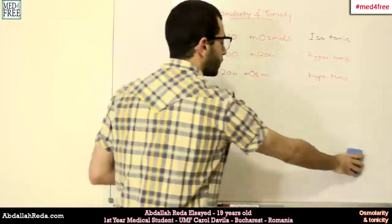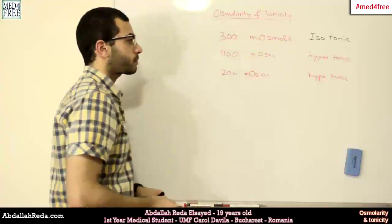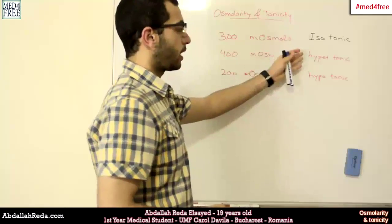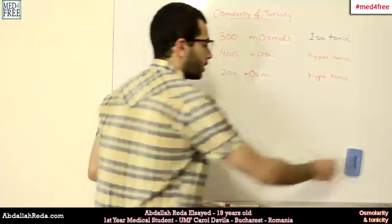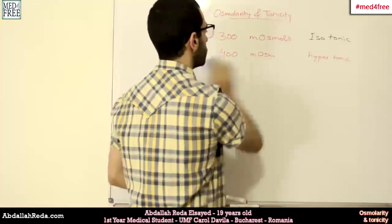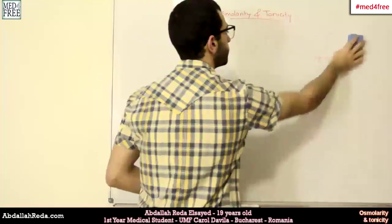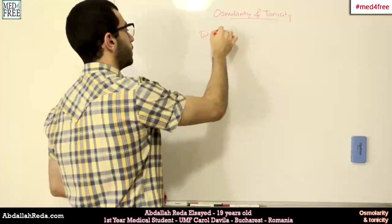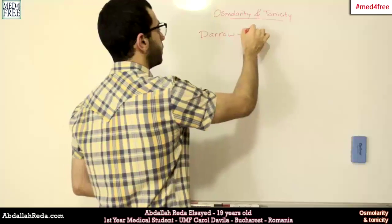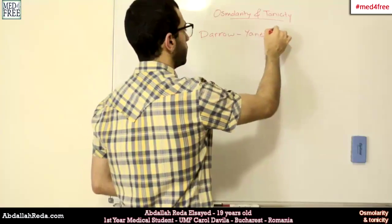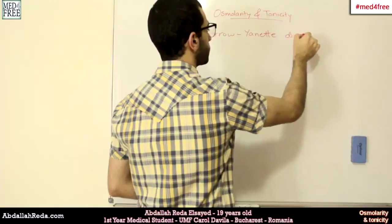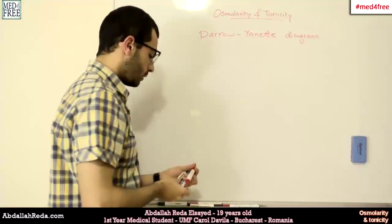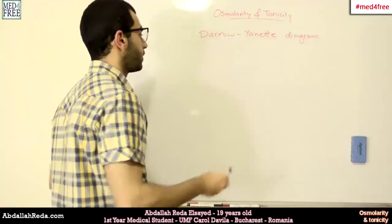Accordingly, due to the exchange, because of the fluids being isotonic, hypertonic or hypotonic, we have a diagram which is called the Darrow unit diagram, and the idea behind this diagram is very simple.